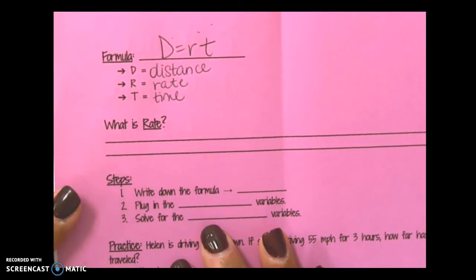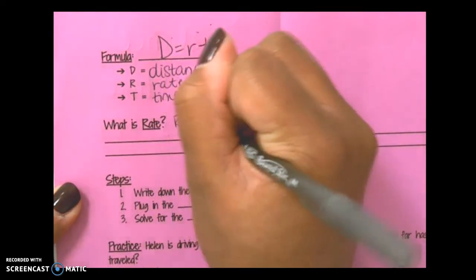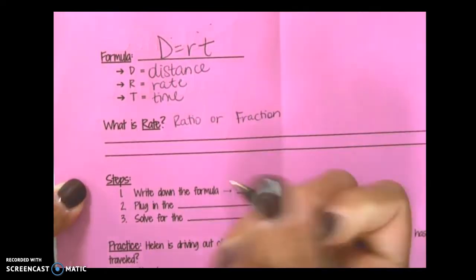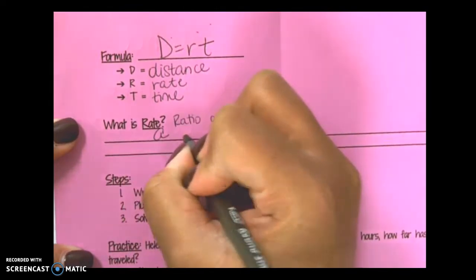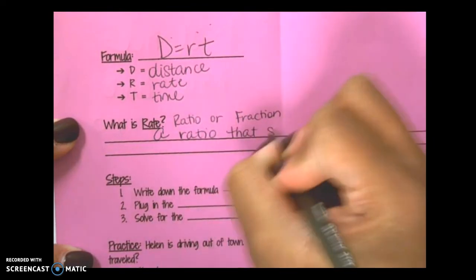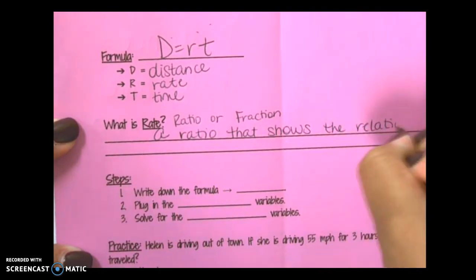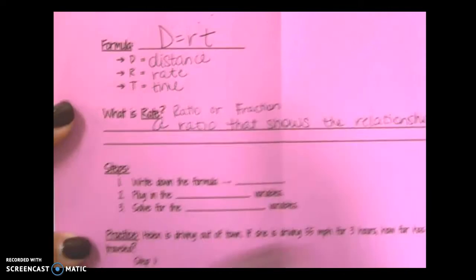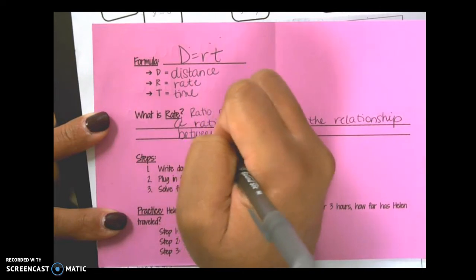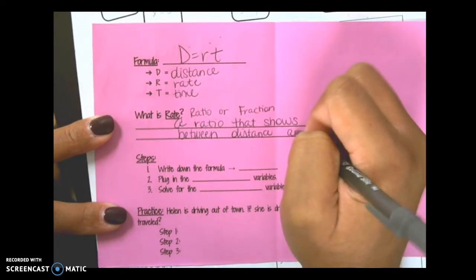What is rate? We've talked about the word rate in our rate of change notes. Rate is another name for ratio or fraction. It is a ratio that shows the relationship between distance and time.